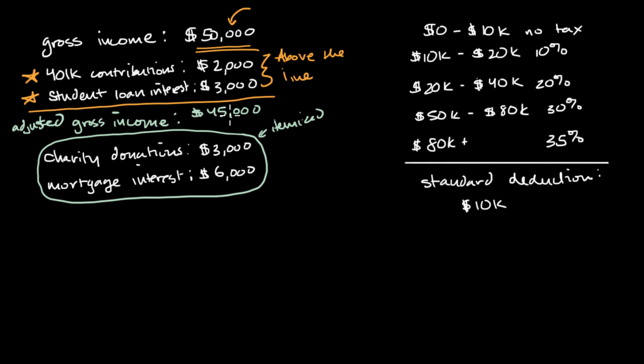I would take that from the $45,000, and I could have a situation where my taxable income would be $45,000 minus $9,000, which is going to be $36,000 of taxable income.